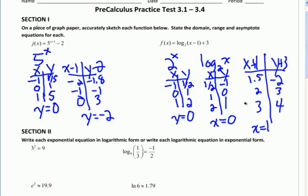And if you're looking for the domain and range, you can just look at the graph. You'll know that the domain of every exponential function is negative infinity to infinity. And therefore the range of every log function is negative infinity to infinity, because they're inverses of each other.